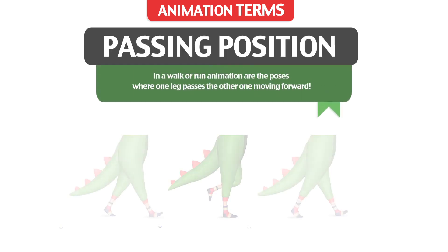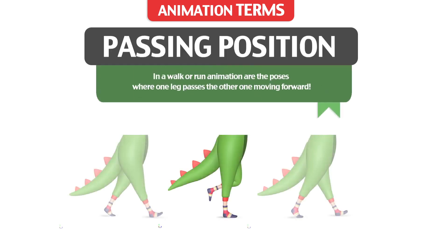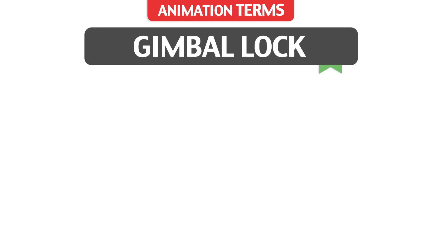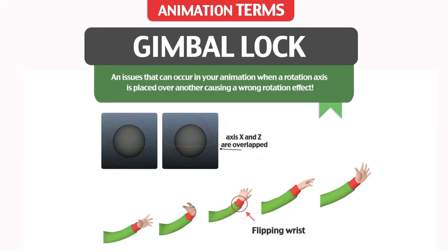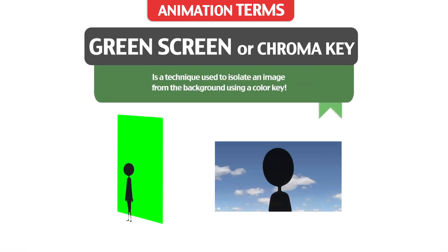Passing Position: in a walk or run animation, these are the poses where one leg passes the other one moving forward. Gimbal Lock: an issue that can occur in your animation when a rotation axis is placed over another, causing a wrong rotation effect.